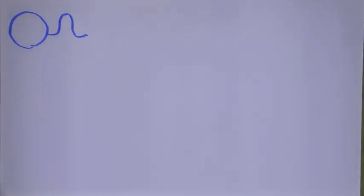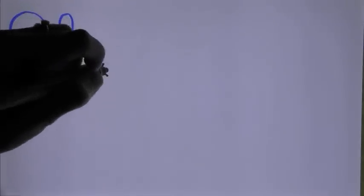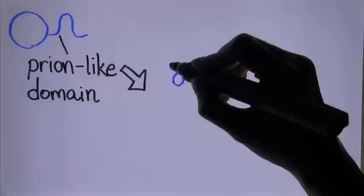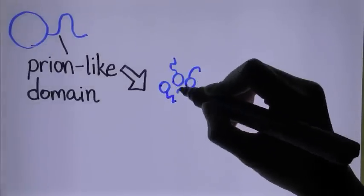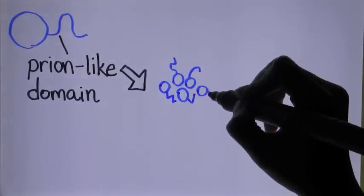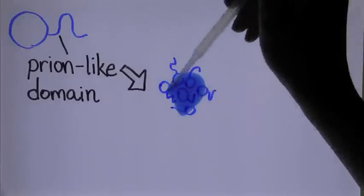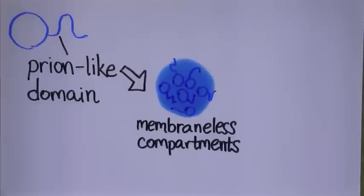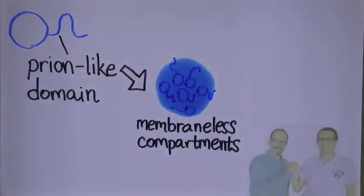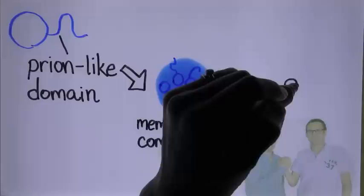In my lab, we study proteins that contain large disordered regions known as low complexity or prion-like domains. Changes in many of these proteins are associated with age-related diseases. It turns out that in healthy cells, these proteins are often found in membrane-less compartments. So we decided to team up with Tony's lab to see if prion-like proteins can form liquid droplets inside cells.